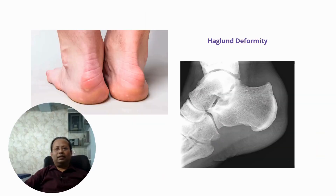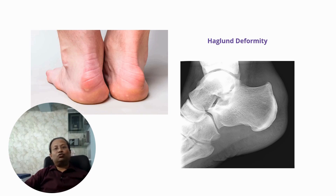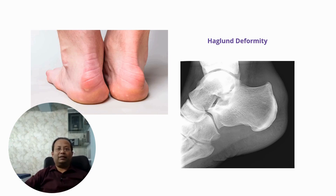Clinically, we very commonly encounter a Haglund deformity. This deformity is a bony enlargement formed at the posterior and superior aspect of the calcaneum. This deformity leads to retrocalcaneal bursitis, which can lead to loss of fat planes.